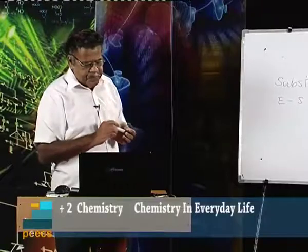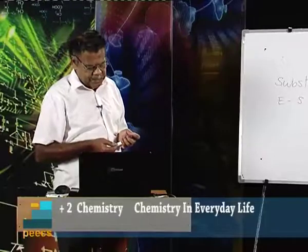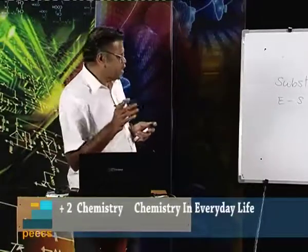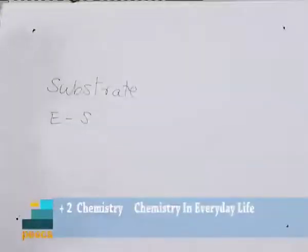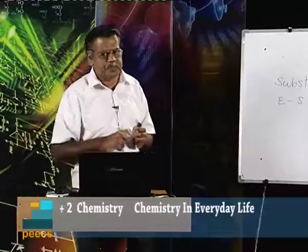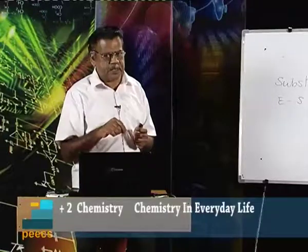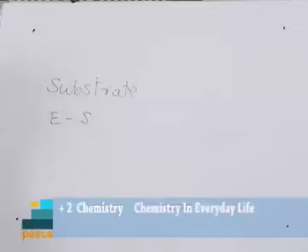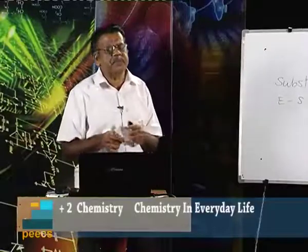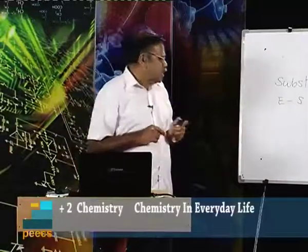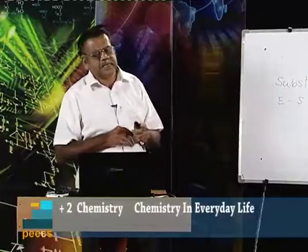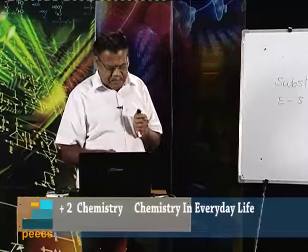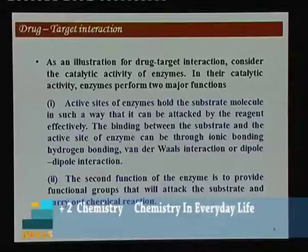The second function of the enzyme is to provide functional groups that will attract the substrate and carry out the chemical reaction. Now, how do drugs inhibit the activities of enzymes? Such drugs which inhibit the functions or activities of enzymes are called enzyme inhibitors. Drugs inhibit the attachment of substrate on the active sites of enzymes in two different ways.